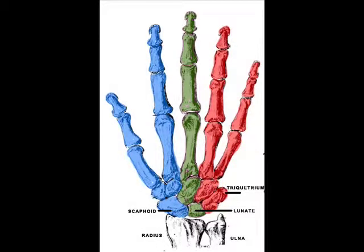First, look at this picture and see how it's coloured. You can see that the hand is divided into three parts, just as the foot was divided into two parts. One part consists of the thumb and the index finger. Another part is the little finger and the ring finger. And the third part, which is different in the hand, is that the middle finger is structurally separate from those other two parts.